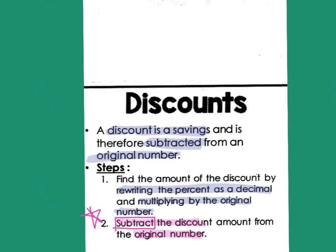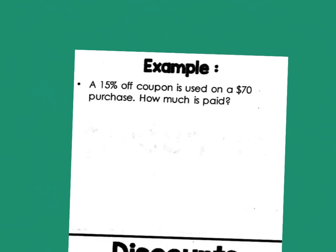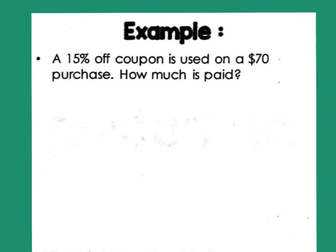So now let's look up here at the example they give us at the top. Our important information. It says that we're going to do a 15% off coupon for shopping, and it's used on something that was worth $70.